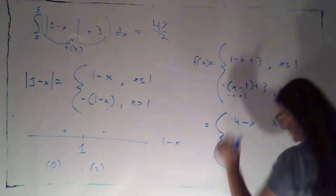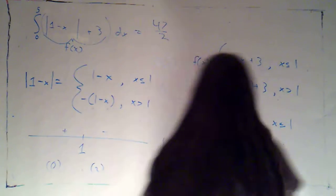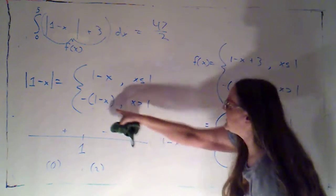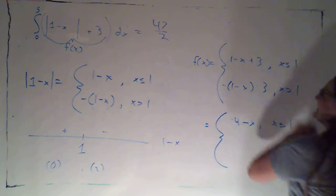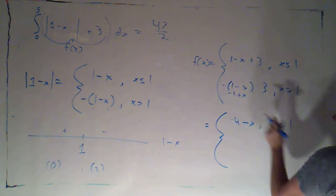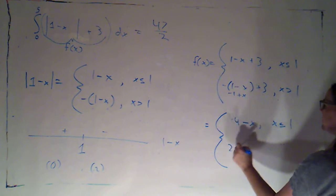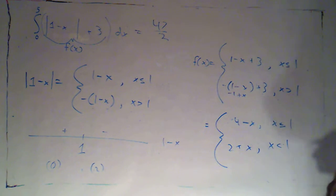I'm sorry I miscopied that. My bad, it was supposed to be the opposite of 1 minus x which becomes a negative 1 plus x. So negative 1 plus x plus 3 would be 2 plus x and that's if x is less than 1.